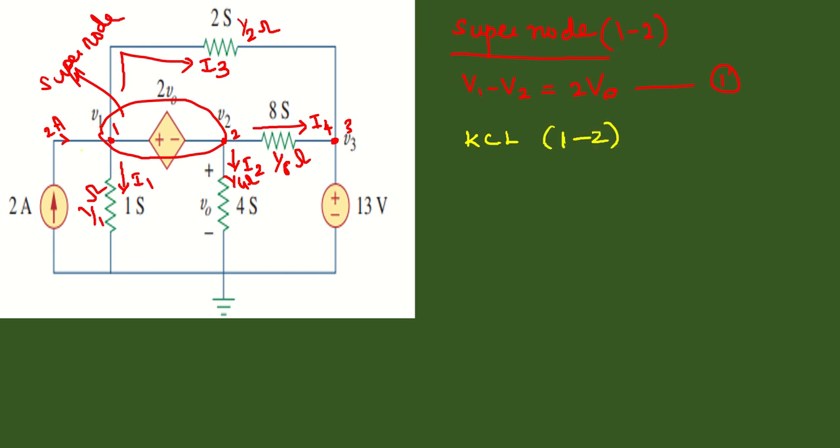We'll look at what currents are entering into nodes 1 and 2. The 2-ampere current alone is entering, which equals the sum of the leaving currents: I1 plus I3 plus I2 plus I4. We have to consider both first node and second node because it is a super node.